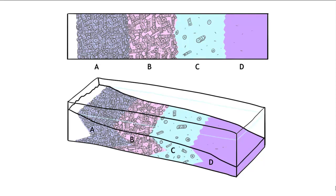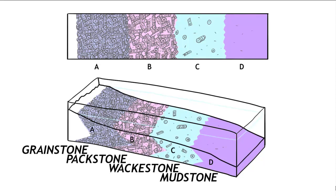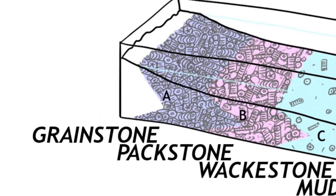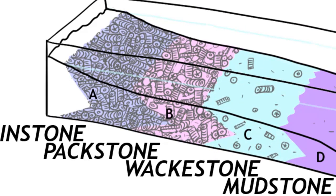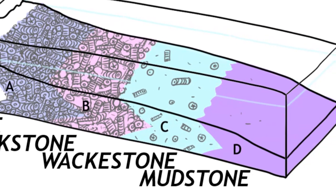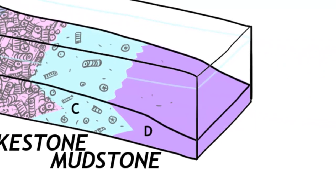So here we've just got four sedimentary facies shown. These are grainstone at location A, packstone at location B, wackestone at location C, and mudstone at location D.